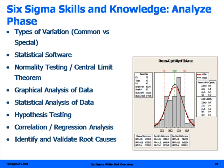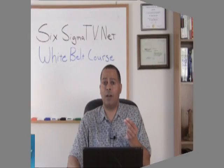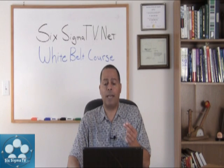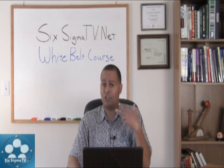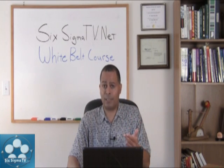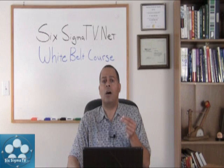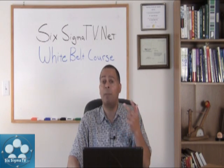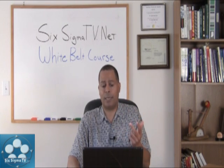One of the things you'll want to look at is once you gather data, you'll have different types of variation. Are you looking at common cause variation or special cause variation? Common cause variation is variation common to your process. Special causes are those types of variation that are non-common or anomalies in your process.